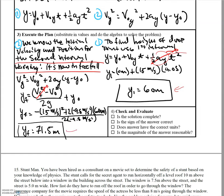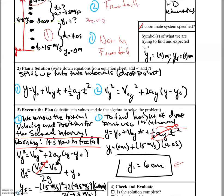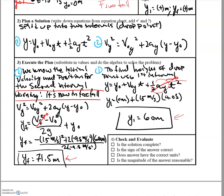One thing to watch out for: depending on what you choose for your initial height, you may have chosen zero at the drop point, giving you 11.5 meters. Just be aware where that distance is measured from. If you called the drop spot your zero point, you need to add the 60-meter drop position to get the final height from the ground — 71.5 meters total. Just be consistent with where you're measuring from.